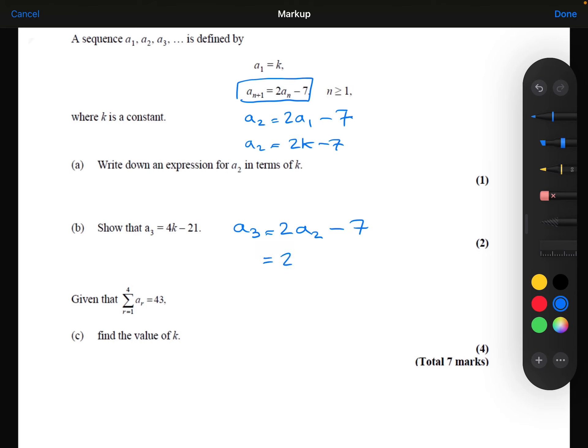And in the previous part of the question, we showed that a₂ was 2k minus 7. So two lots of 2k is 4k, two lots of the minus 7 is minus 14, minus the 7. So we get 4k minus 21. That is a₃.